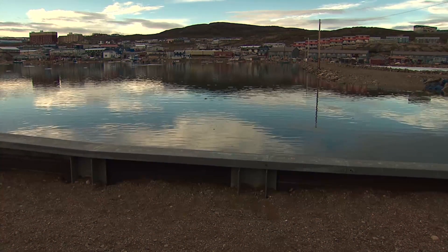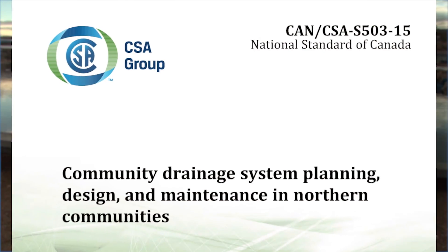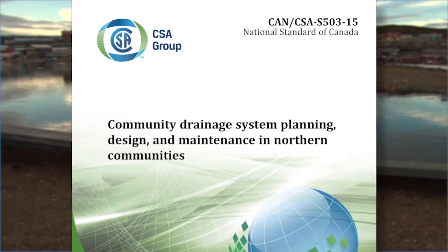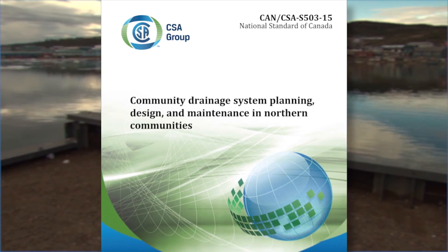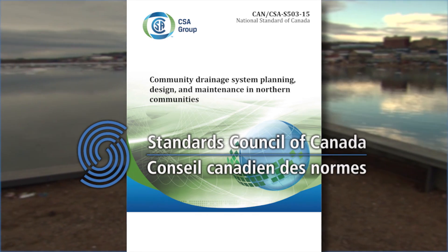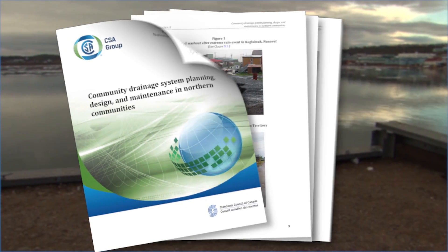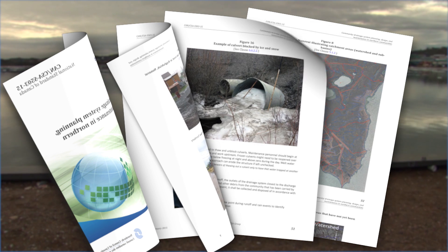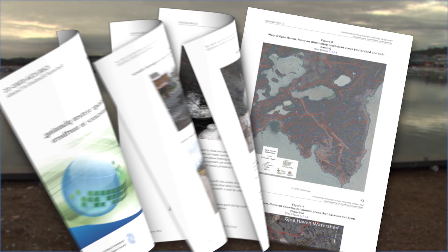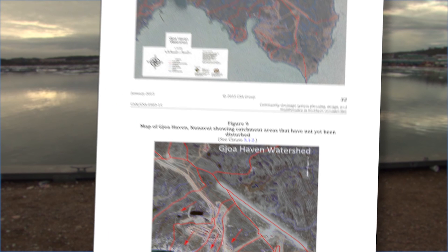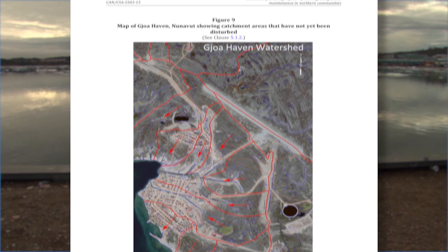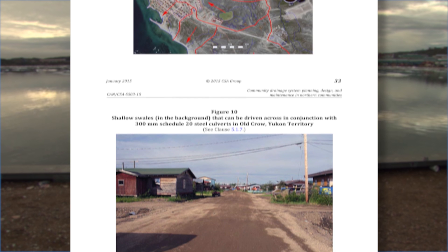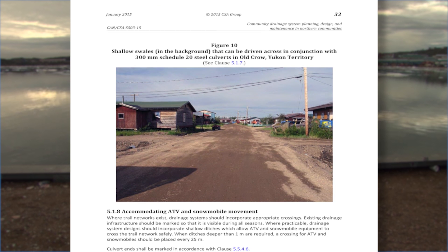This video is designed to explain a new National Standard of Canada for community drainage system planning, design and maintenance developed specifically to meet the needs in a changing north, and developed by the CSA Group, and approved as a National Standard of Canada by the Standards Council of Canada. The National Standard of Canada for Community Drainage Systems sets out the minimum planning, design and maintenance requirements for community drainage systems in the north.